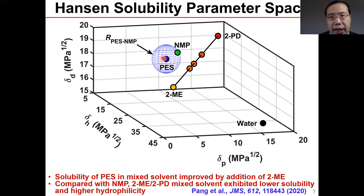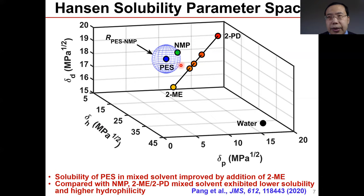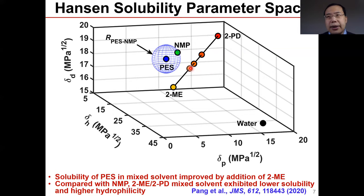For the new solvent system, 2PD and 2ME are farther away from PES in Hansen space, meaning they are more difficult to dissolve PES individually. However, if we mix those two, the mixed solvent is much closer to PES, though still farther away than the distance between PES and NMP. Overall, the new solvent system shows lower solubility compared with NMP.